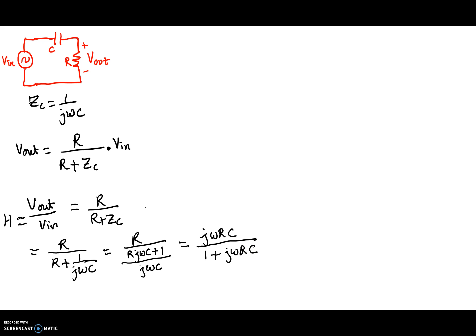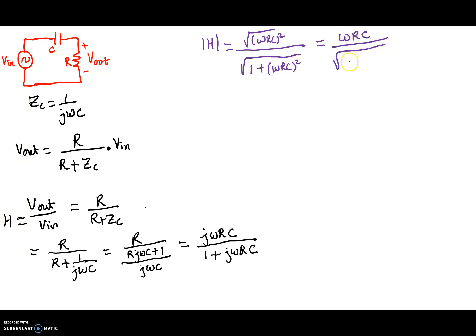So this is the transfer function of the RC circuit with voltage across the resistor. This transfer function has both magnitude and phase angle. Writing down the magnitude of H: the top part has only the imaginary term, so its magnitude is √(ωRC)², divided by the bottom part √(1 + (ωRC)²). Simplifying, this gives ωRC on top and √(1 + (ωRC)²) in the bottom.